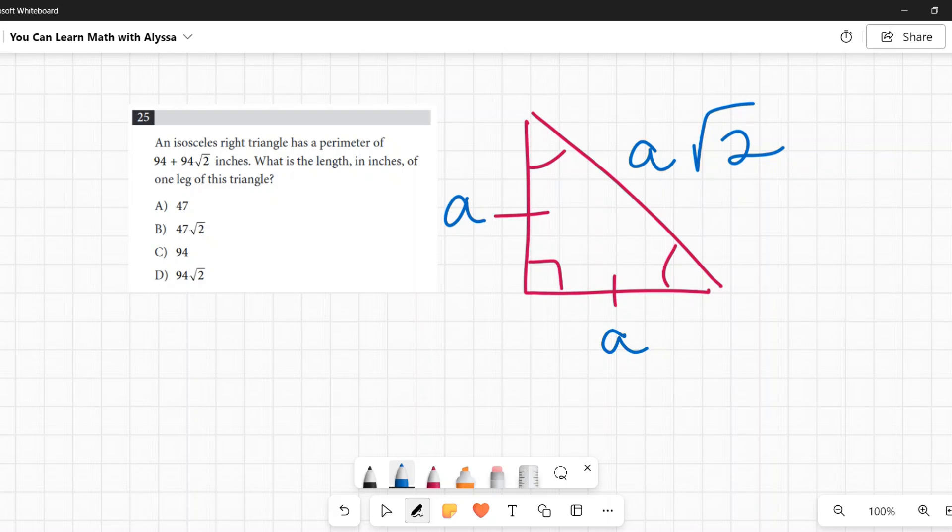Now we add all those together to get the perimeter. We have a perimeter of 94 plus 94 square root of two. Your initial thought might be like, oh it's going to be really simple - it's going to be these two added together and then a square root of two is right there. It's not. Let's look at what would happen here.